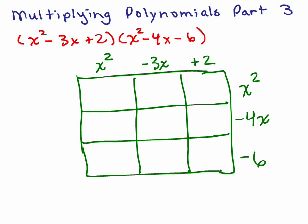We have 9 multiplications, and wherever the terms meet, that's where you put the product. So 2 times x squared goes right here as 2x squared, negative 3x times x squared is negative 3x cubed, and x squared times x squared is x to the fourth.